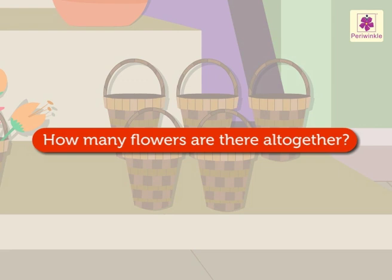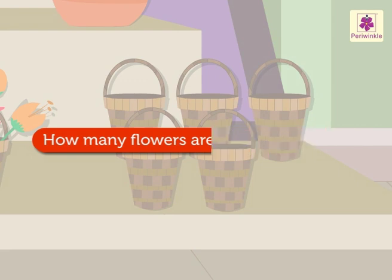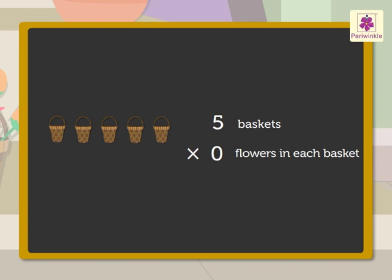How many flowers are there altogether? Here, there are five baskets, but there are no flowers in each. That is, there are zero flowers in each. So, five into zero is equal to zero.